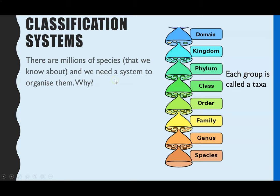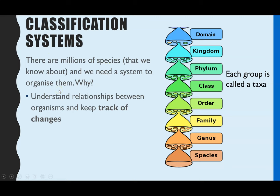What is the point of classifying organisms in the first place? There are absolutely millions of species, with many still undiscovered, so we need a way to organize them. It helps us understand relationships between organisms and track changes — whether that's understanding evolution, the impact of climate change, or human impact. The binomial system and the Linnaeus classification system are universal, meaning you can share data globally to help keep track of organisms.